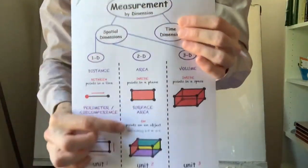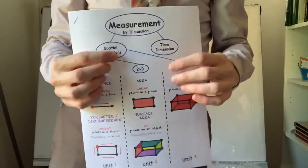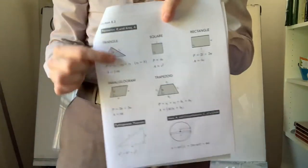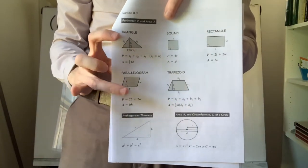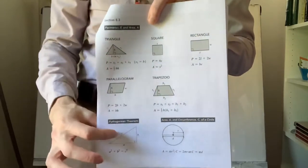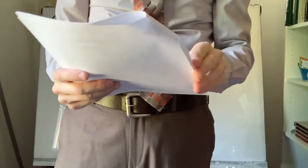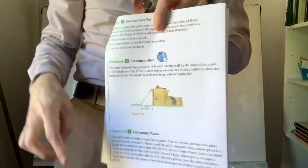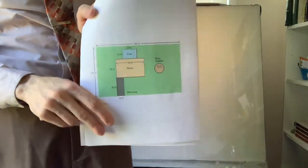Anyhow, the packet I have for you consists of this page. This is an overview of different measurements according to dimension. Here is — although it's in black and white, your copy would be in color — the formulas that are relevant to Section 8-3. I would definitely print that unless you have them memorized. And then there are the word problems. I didn't leave the solutions; I'm going to go through these entirely. They are in the book if you absolutely need them. There's a diagram for one of them. Print that and we'll go over it.